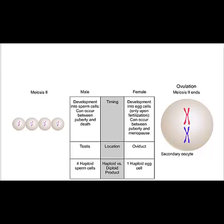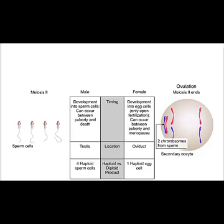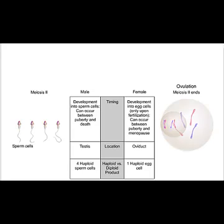The final result of spermatogenesis is four haploid sperm cells for each spermatogonium. In contrast, oogenesis can result in one egg cell and two polar bodies for each oogonium, but only if fertilization has occurred.